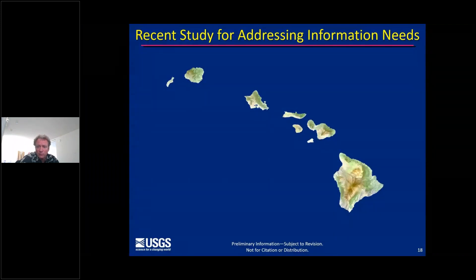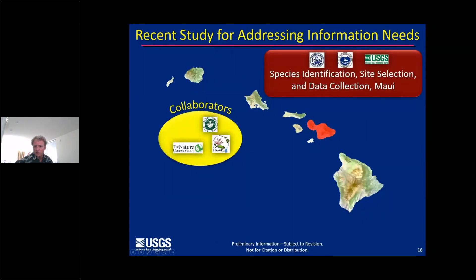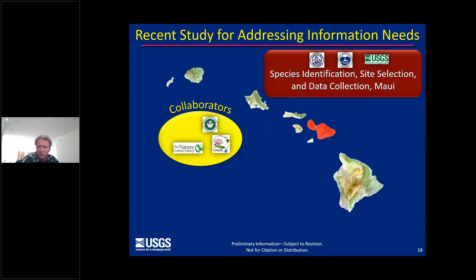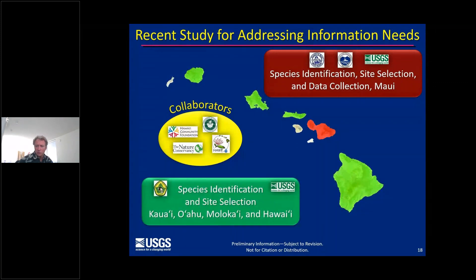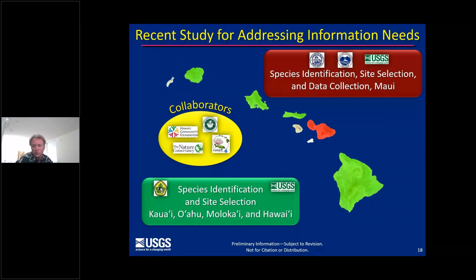To begin to address these information needs, our center conducted a collaborative study with the University of Hawaii at Manoa, specifically Tom Jambaluka and his group at the Eco-Hydrology Lab. The study comprised two separately funded collaborative projects. The first project began in 2015 and involved species identification, site selection, and limited field data collection on the island of Maui, with support from the Maui County Department of Water Supply and the State of Hawaii Commission on Water Resource Management. The second project began in 2017 to supplement the Maui study and involved species identification and site selection on the islands of Kauai, Oahu, Molokai, and Hawaii, supported by the State of Hawaii Division of Forestry and Wildlife.